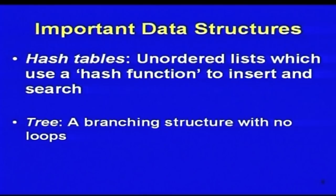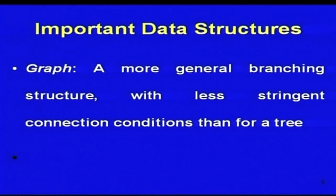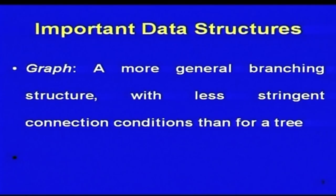Hash tables are unordered lists which use a hash function to insert and delete. Then you have a tree — a very important data structure. Unlike most others, it is a non-linear data structure because it has a branching structure. Then there is a graph. A graph is a more general type of data structure than the tree — where a tree has no loops, a graph has less stringent conditions and there can be loops in a graph.